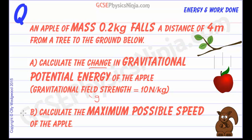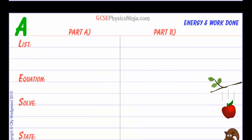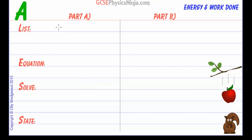And the second part of the calculation, we will then use that gravitational potential energy that we've calculated to work out the maximum possible speed of the apple by using the equation for kinetic energy. So let's dive in and see how we can do this.